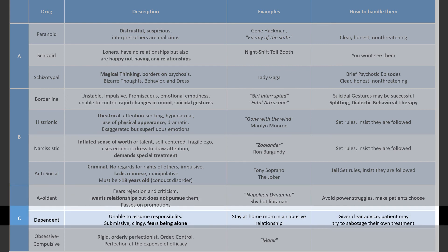Dependent personality disorder patients are submissive and clingy — they need to be taken care of because they have an unrealistic fear of rejection. This is probably the saddest of all personality disorders — this is a patient like the stay-at-home mom in an abusive relationship who refuses to leave her husband. She needs other people to make decisions for her. A great step exam example is a patient who comes to your office with her husband, who tells you all the information and makes all the decisions while she just sits there. Give this patient clear advice and make sure they don't sabotage their own treatment, because if they don't have a spouse to become dependent on, they may become dependent on you and sabotage treatment to come back more often.